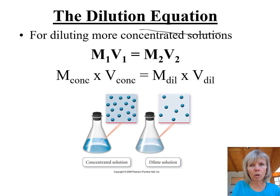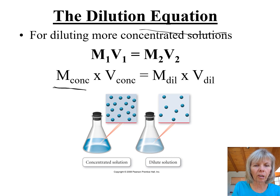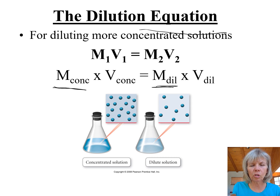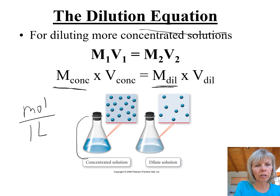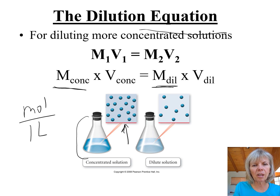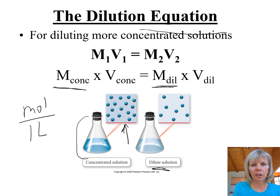The dilution equation is used when we know the concentration in molarity of a concentrated solution and then we add water to it, and we want to figure out what the concentration of the dilute solution is in molarity. In molarity, moles per one liter of solution — when it's concentrated, we have more moles of our substance versus the dilute solution. Dilute means we added water to that solution, so now we have fewer moles of our compound in a specific volume.